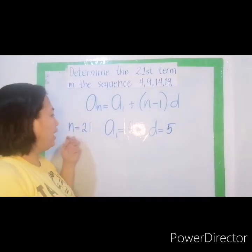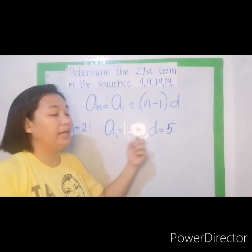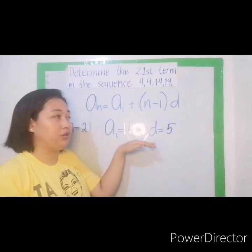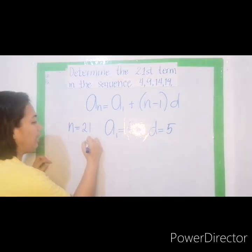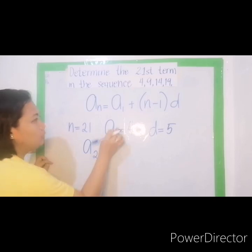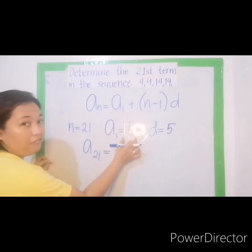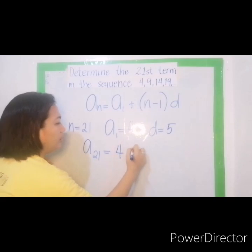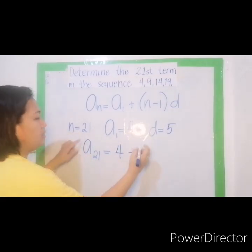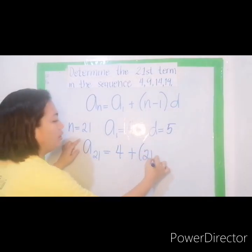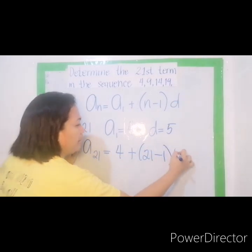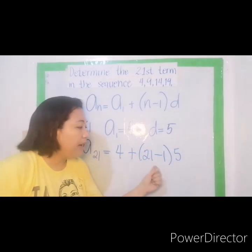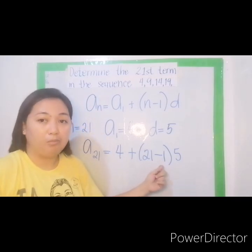So since we have n, a sub 1, and d, we can now substitute this to the general formula. a sub 21 is equal to a sub 1 is 4, plus n is 21 minus 1 times 5. Minus 1 here is a constant number. Huwag nyo muna yun aalisin.